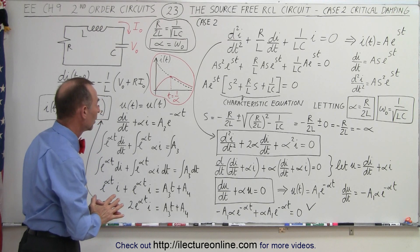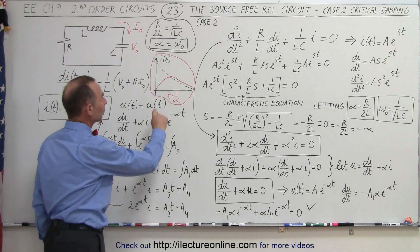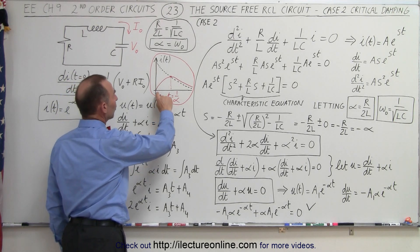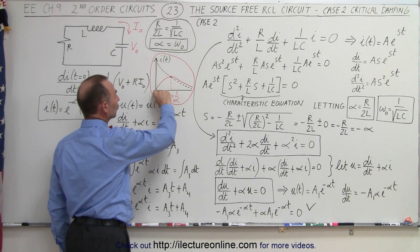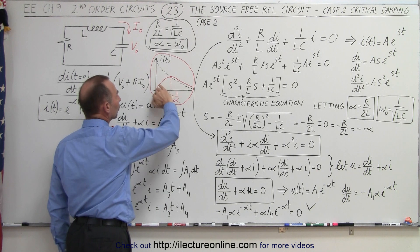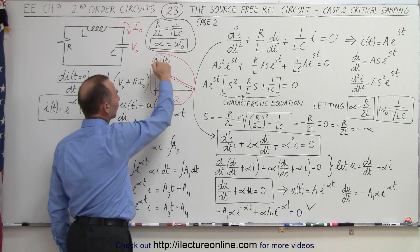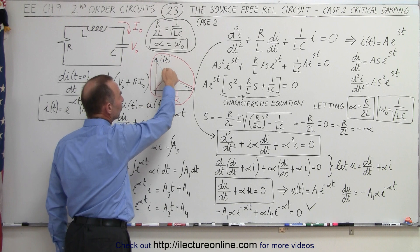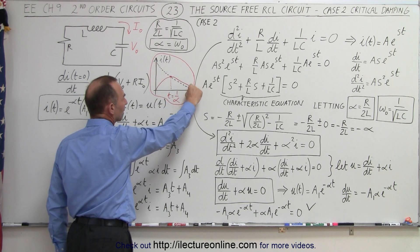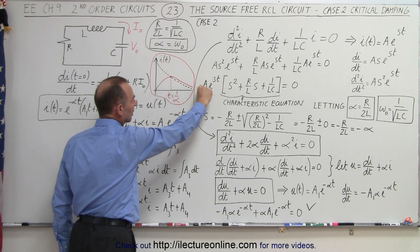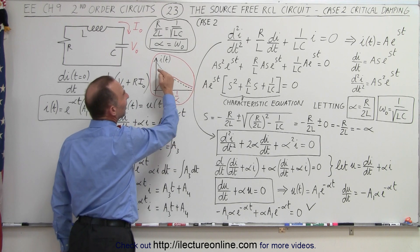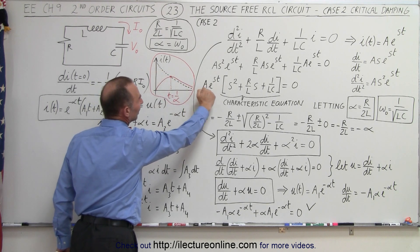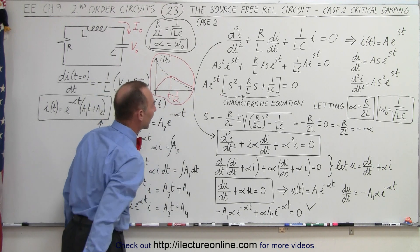Case number two. Our graph looks like this. We see that the curve of the current crosses over at the maximum point of this curve, where we have the e to the minus alpha t curve, and notice then it goes down, and eventually when t becomes infinite, the curves come together.